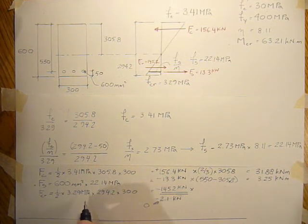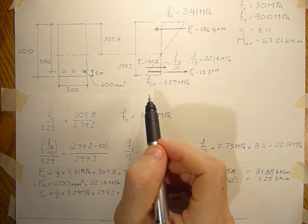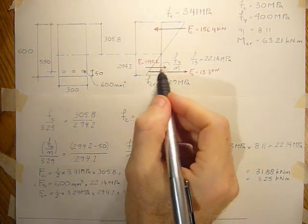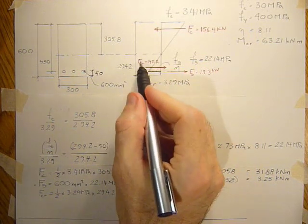And then the force due to the tensile concrete. And again it's two-thirds. We take two-thirds times the height. That's the distance from the centroid where the force acts.